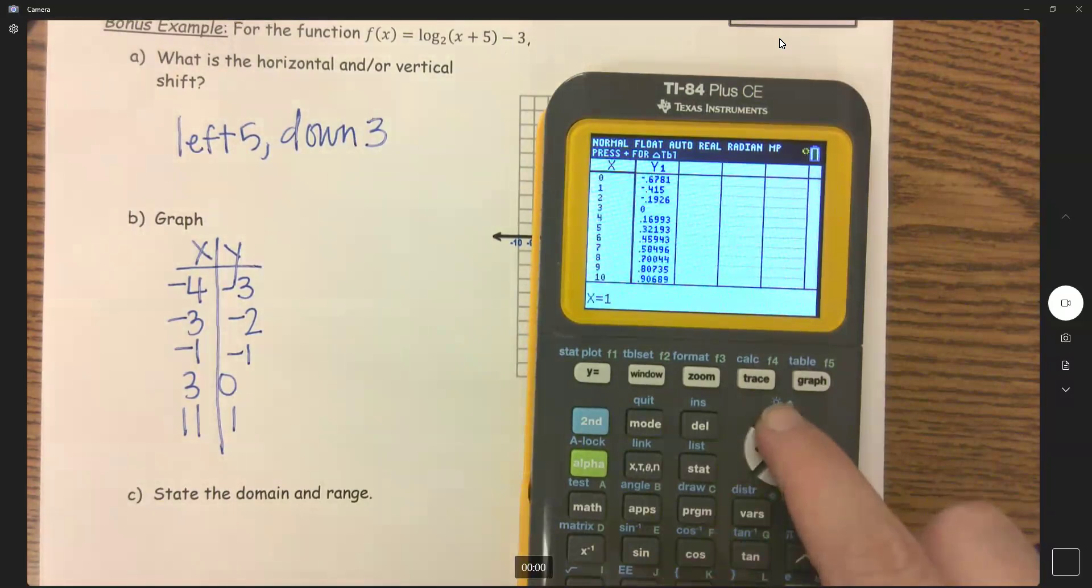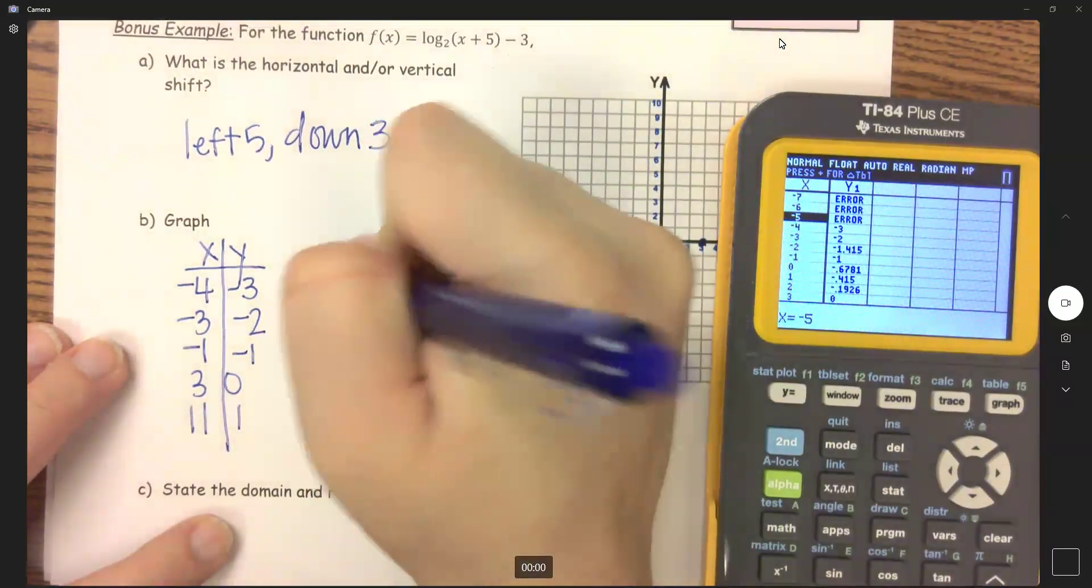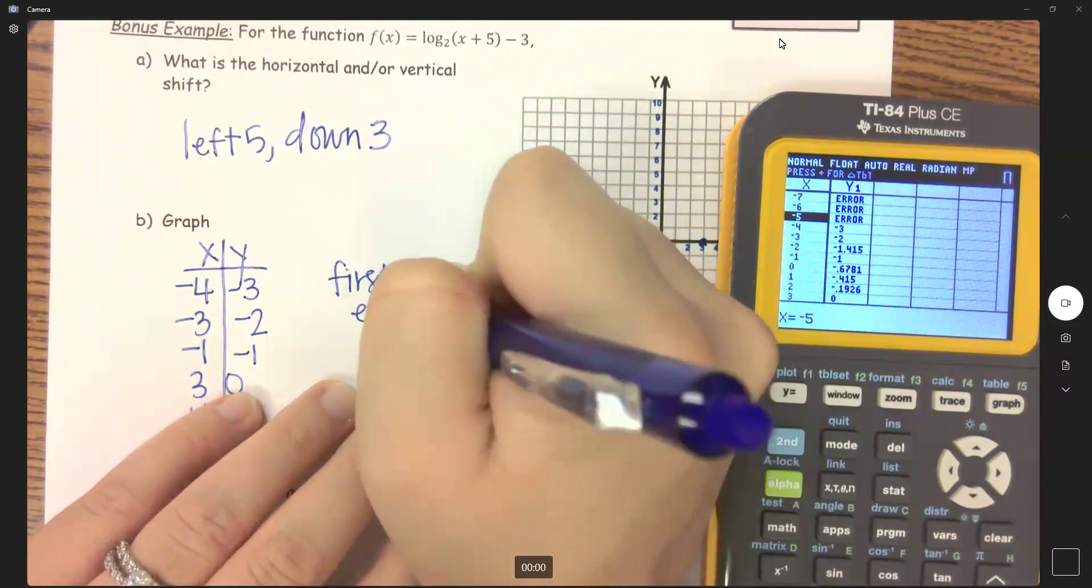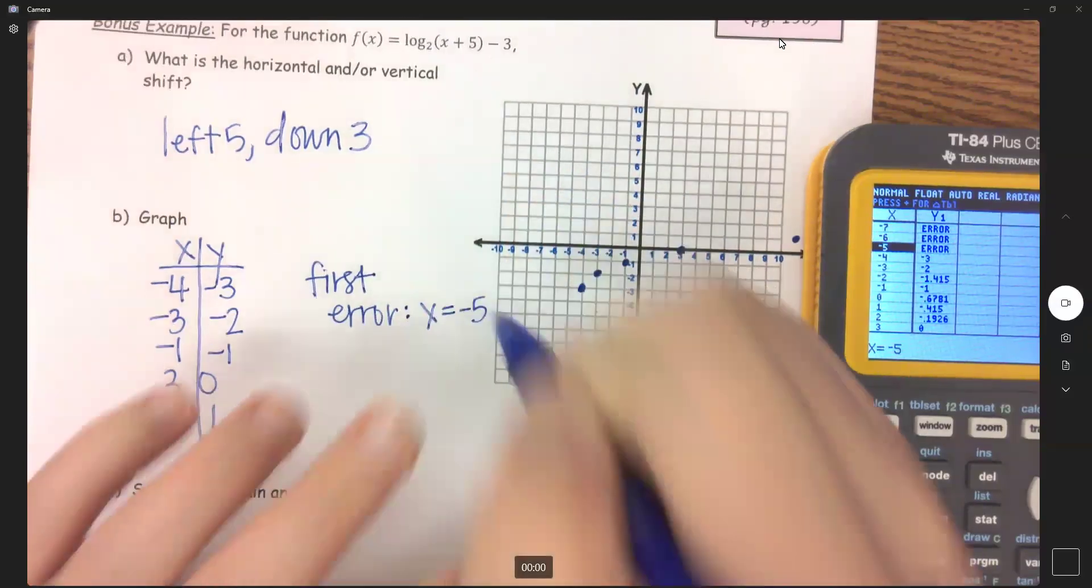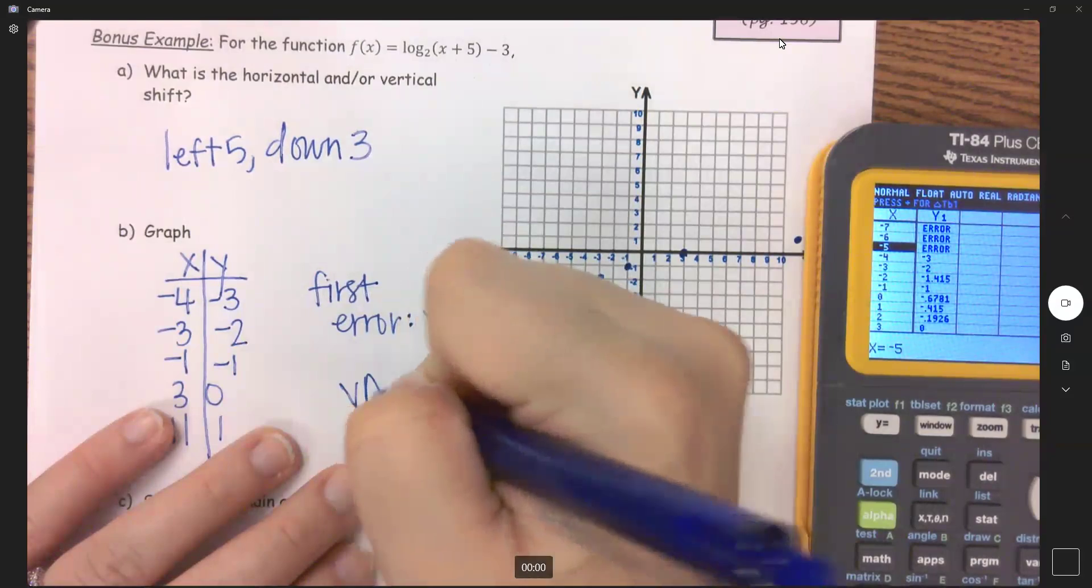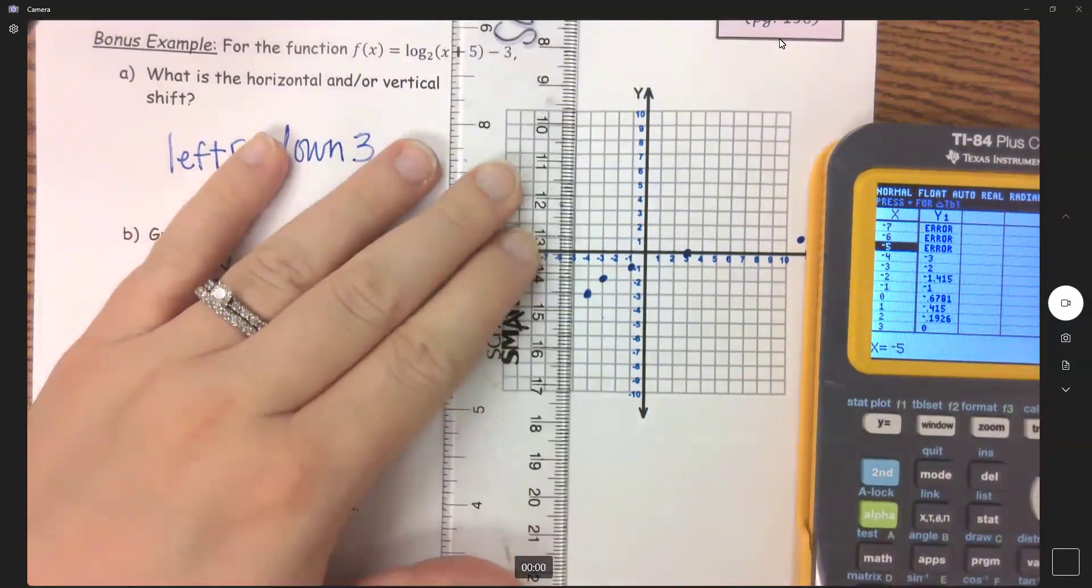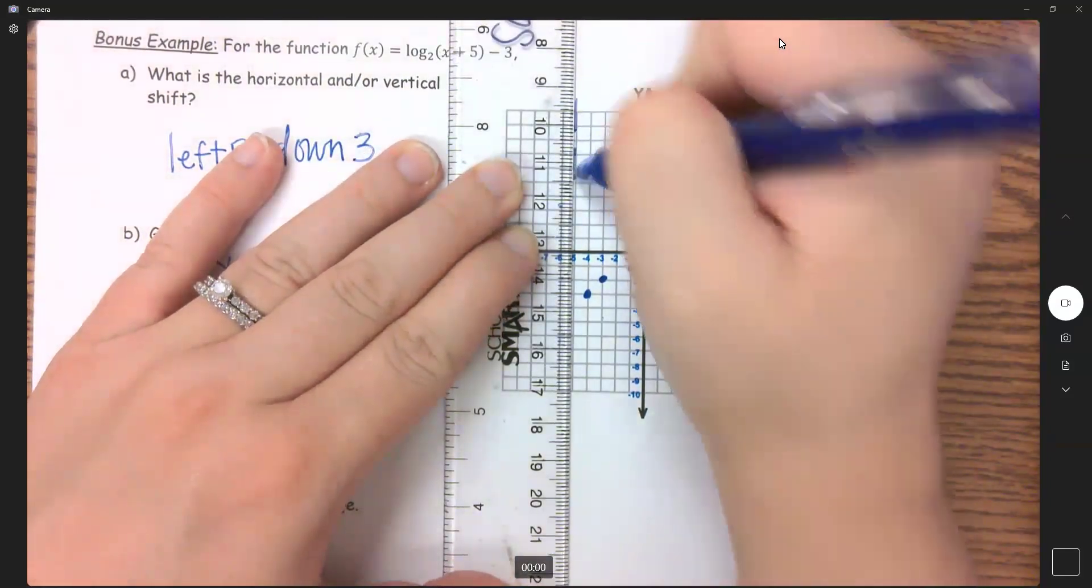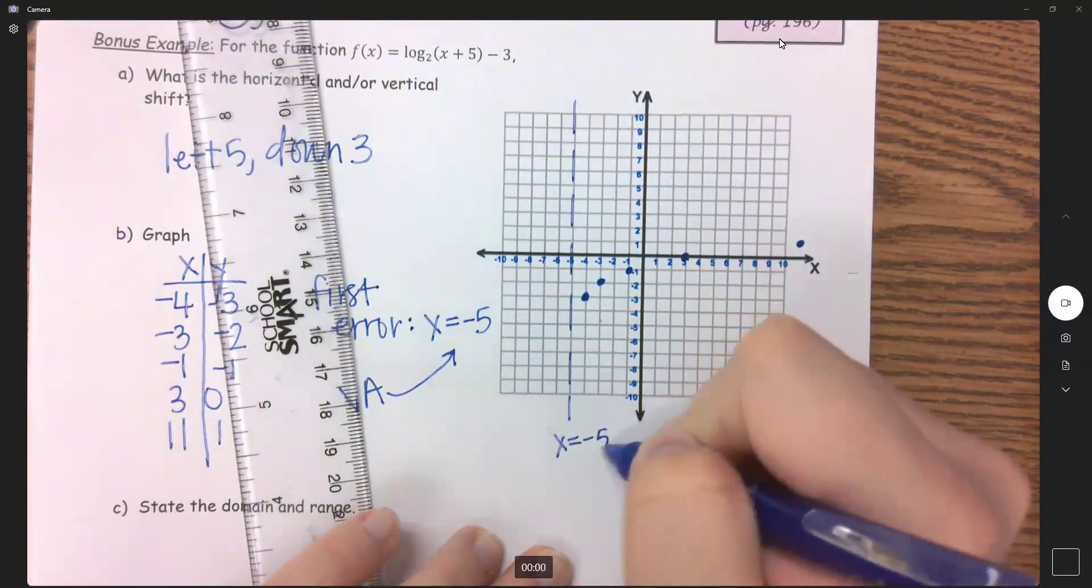So if I scroll back up, here is my first error. My first error is when x equals negative five. This is where my vertical asymptote is. So here at x equals negative five, put my dashed lines and label my vertical asymptote at x equals negative five.